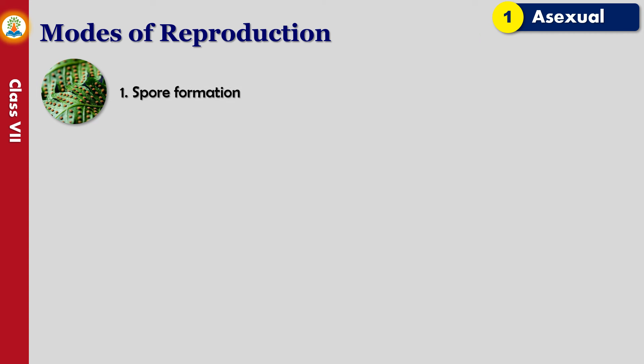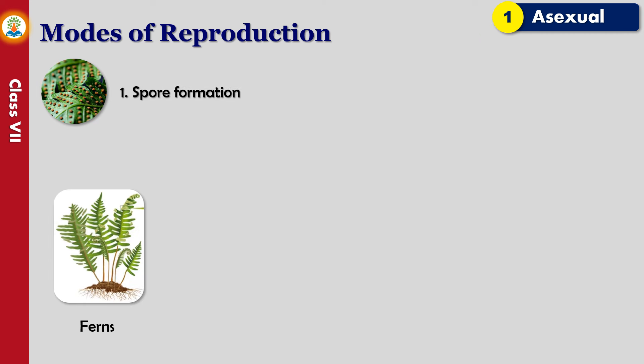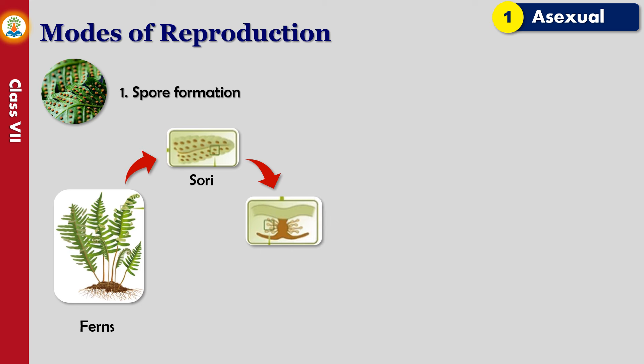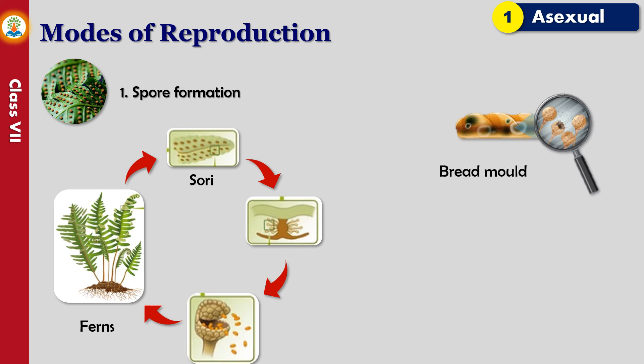In spore formation, plants such as ferns and mosses, seen especially in hilly areas, have spore-producing structures on leaves called sori. The spores are tiny, usually single-celled asexual reproductive units, surrounded by a tough coat for protection. When spores mature, the sori burst and release them into the air. Whenever the spores come in contact with a suitable substratum where enough moisture is present, they germinate to give rise to young plants.